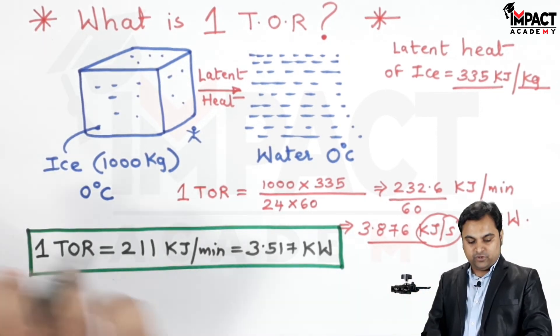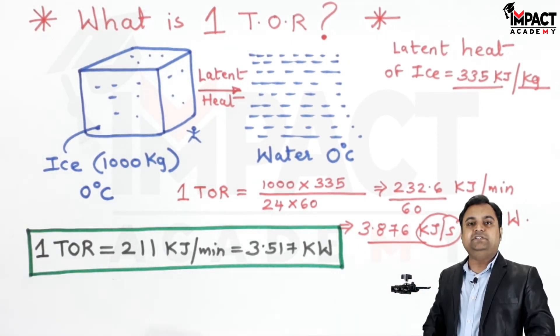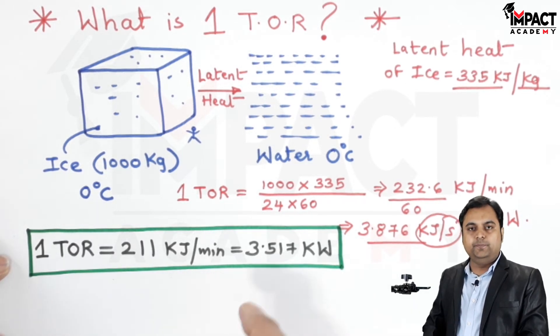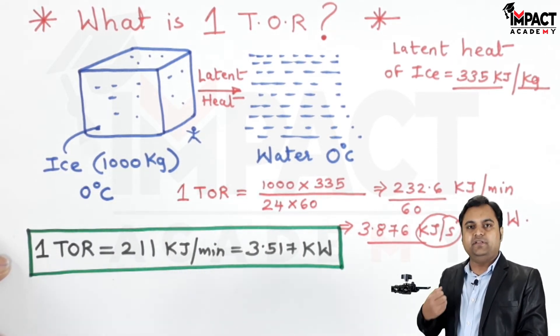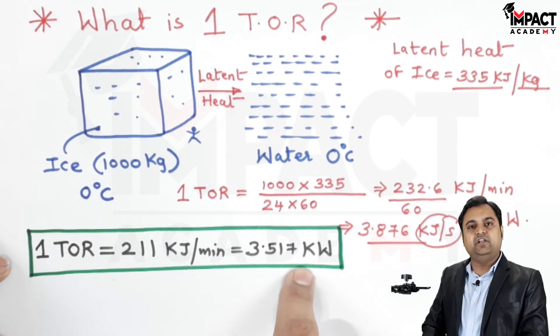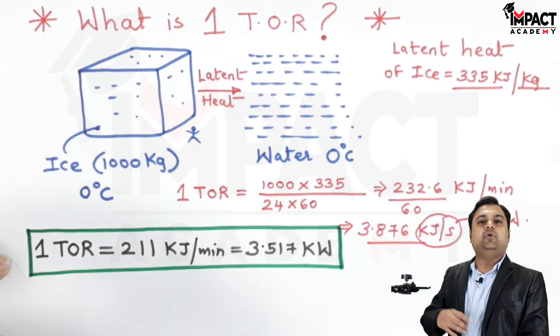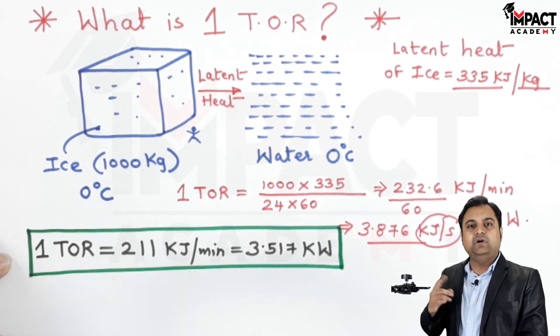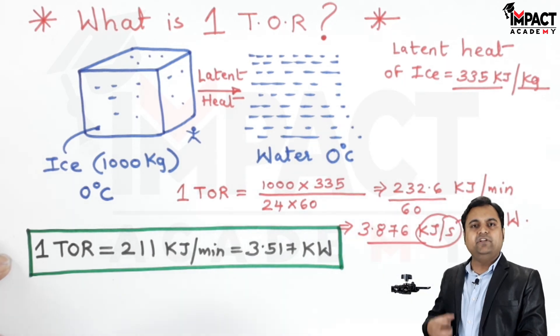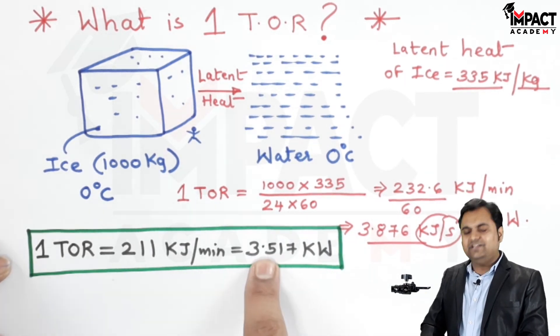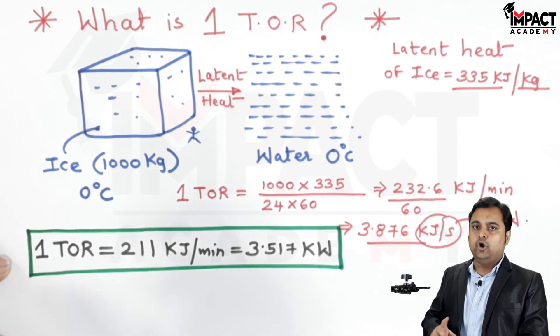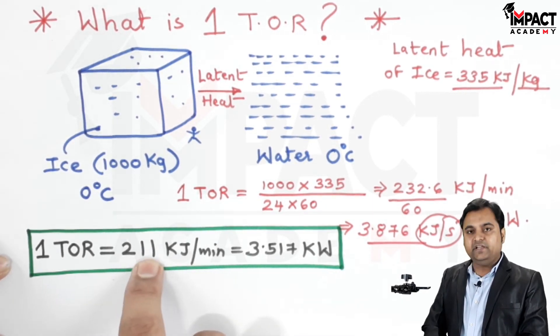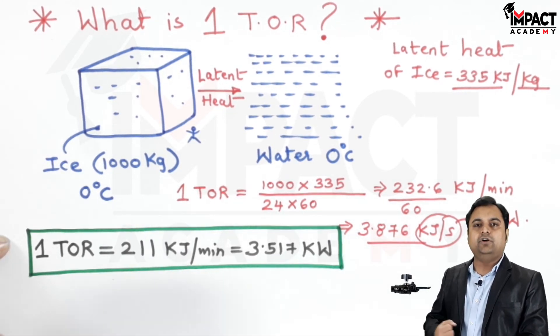So it means whenever we talk about one ton of refrigeration, it means such kind of system would be continuously absorbing the heat of 3.517 kilojoule per second from the required space. Like if we are having an AC of one ton, that one ton AC would be removing the heat from the room equivalent to 3.517 kilojoule in one second, or in minute that AC would be removing 211 kilojoule from the room. So that is the meaning of one ton of refrigeration.